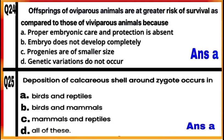Question 25: Deposition of a calcareous shell around the zygote occurs in option A — it occurs in birds and reptiles. So mark A as the correct answer. That's all for today. Thank you very much for staying with me.